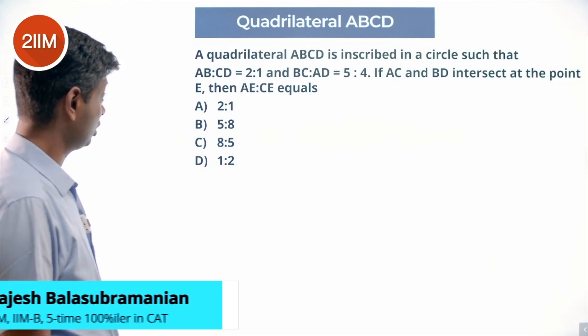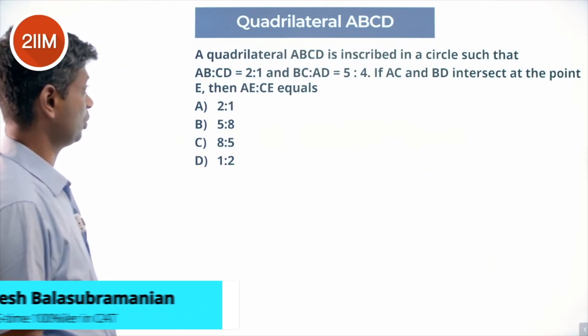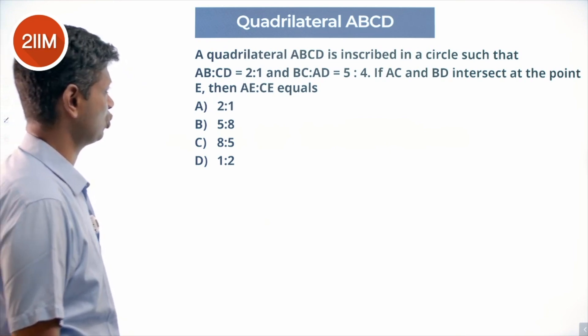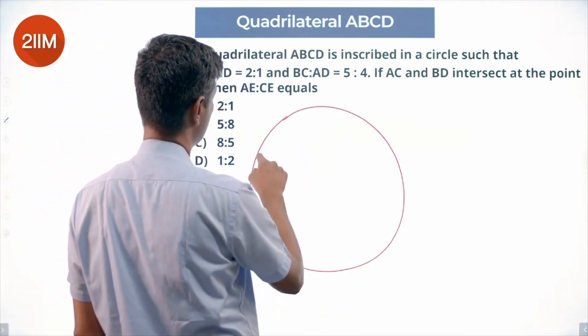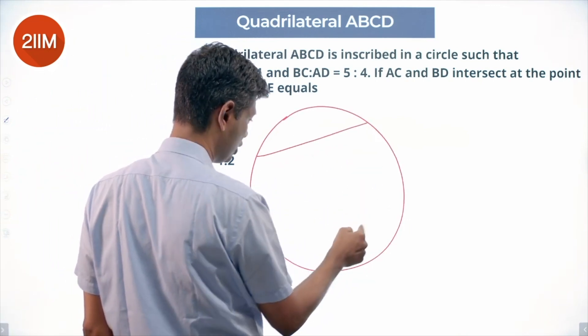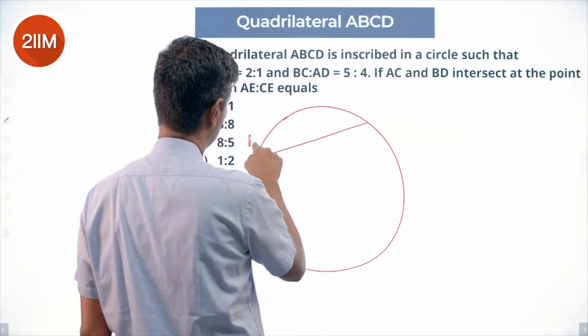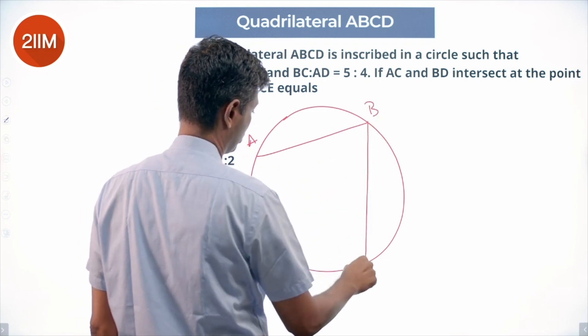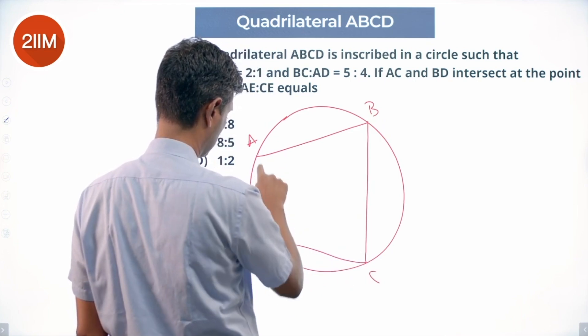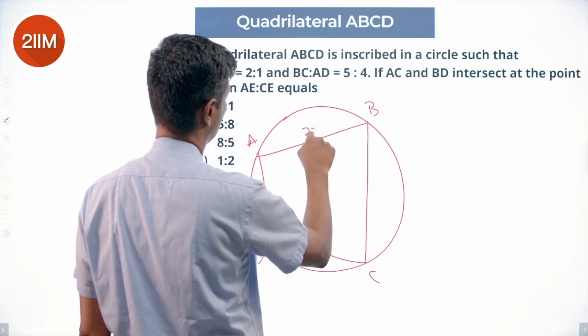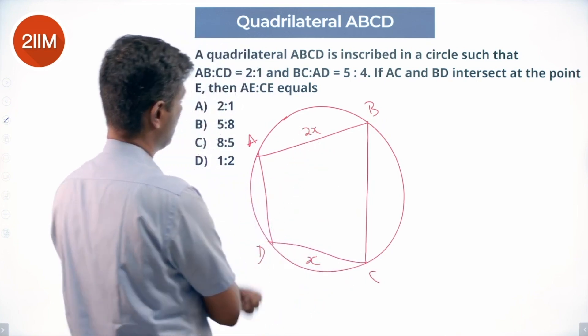Quadrilateral ABCD is inscribed in a circle such that AB:CD = 2:1 and BC:AD = 5:4. So AB is 2x and CD is x, meaning AB is longer. BC should be longer like this, 5y, and AD is 4y.